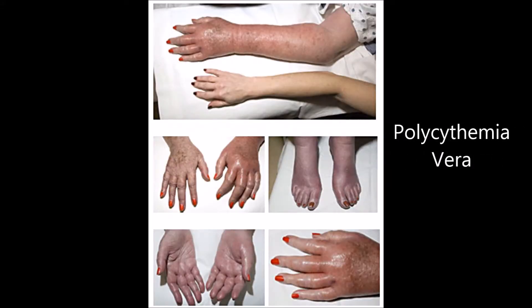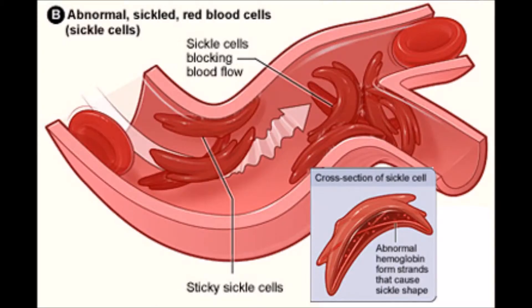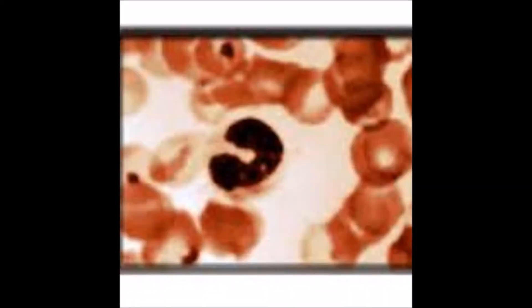Polycythemia vera is a rare cancerous blood disease in which extra red blood cells produced in the bone marrow make your blood thicker than normal. Thus, blood clots are easily formed and can block blood flow through your arteries and veins, increasing the chances of a heart attack or stroke.